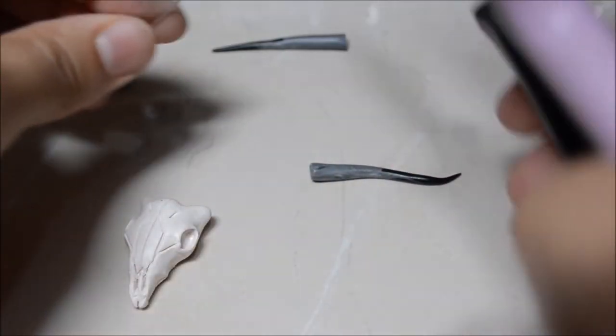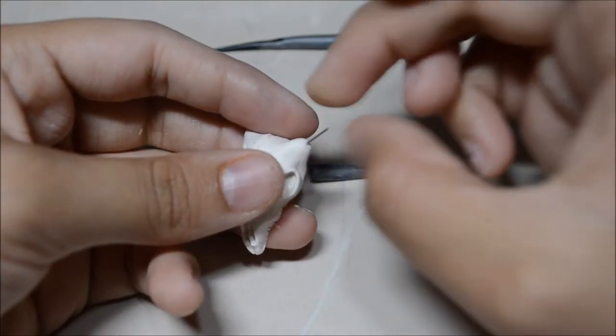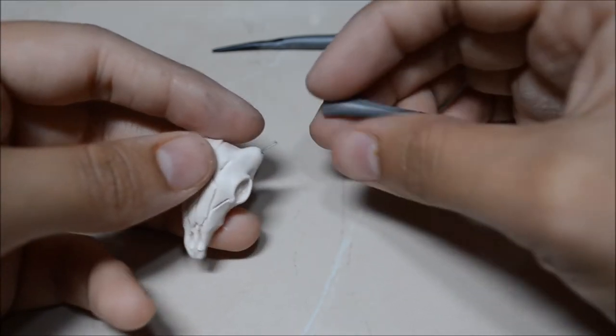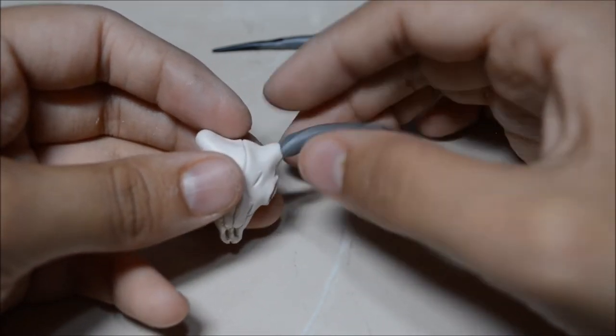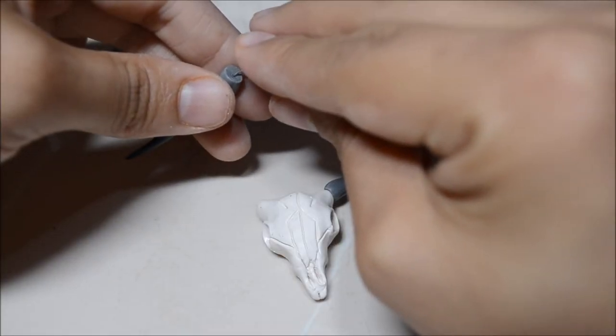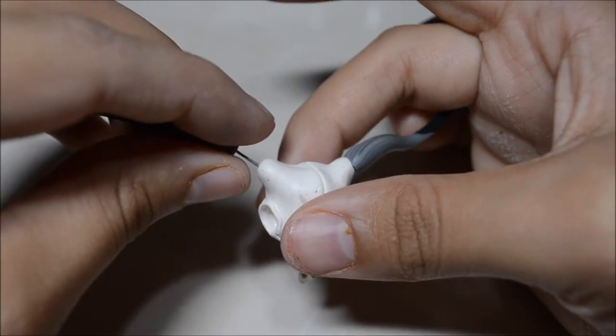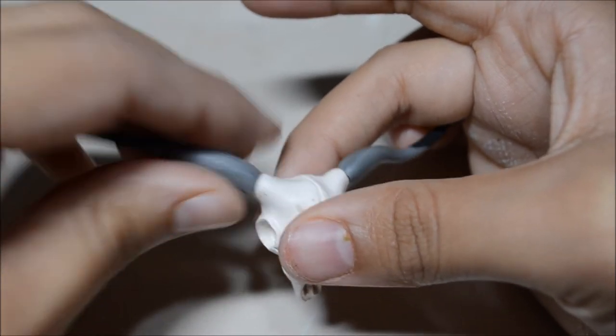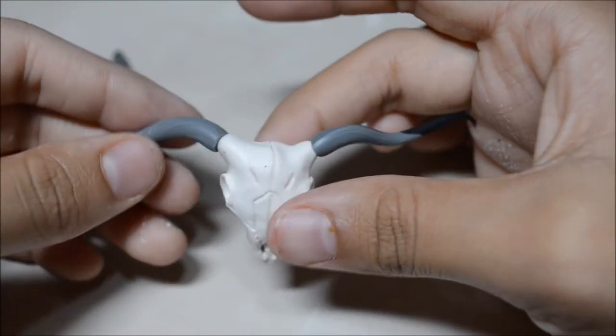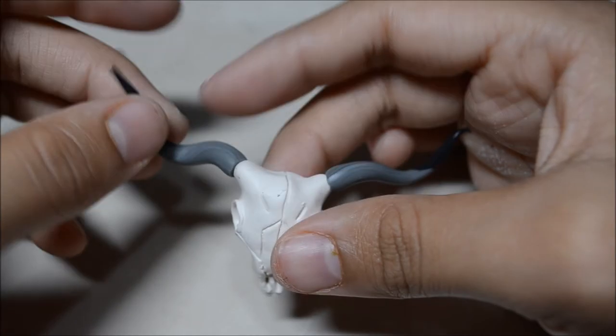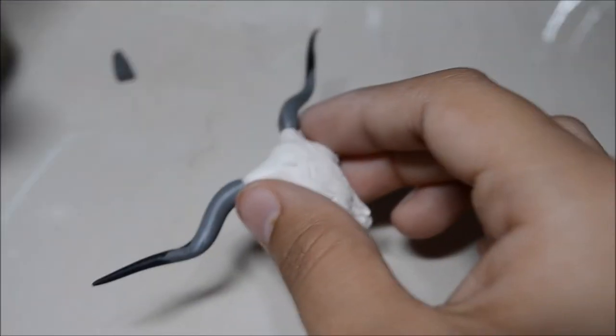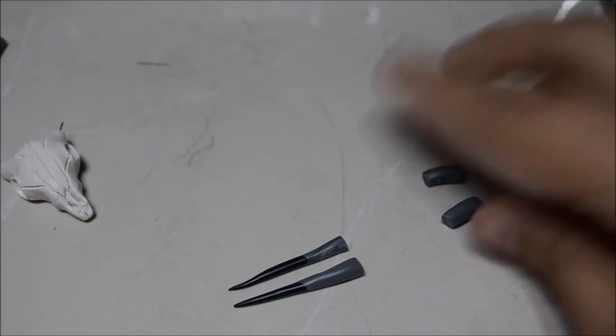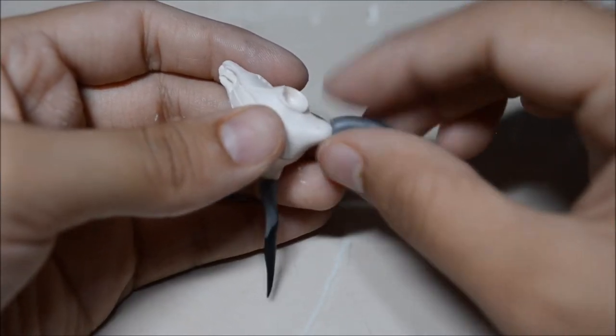And I just went ahead and cut a little piece of wire, put it right where the horn is going to go, and attach the horn. Same to the other side. So I checked and it still didn't fit, so I went ahead and trimmed it again and attached the horns right back.